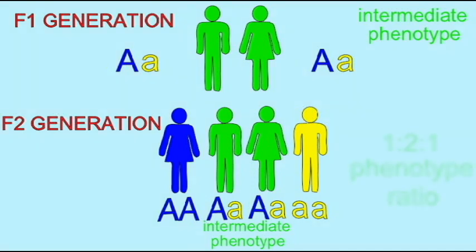Therefore, in incompletely dominant traits, when two heterozygotes are crossed, not only is the genotype ratio 1:2:1, but also the phenotype ratio is 1:2:1.